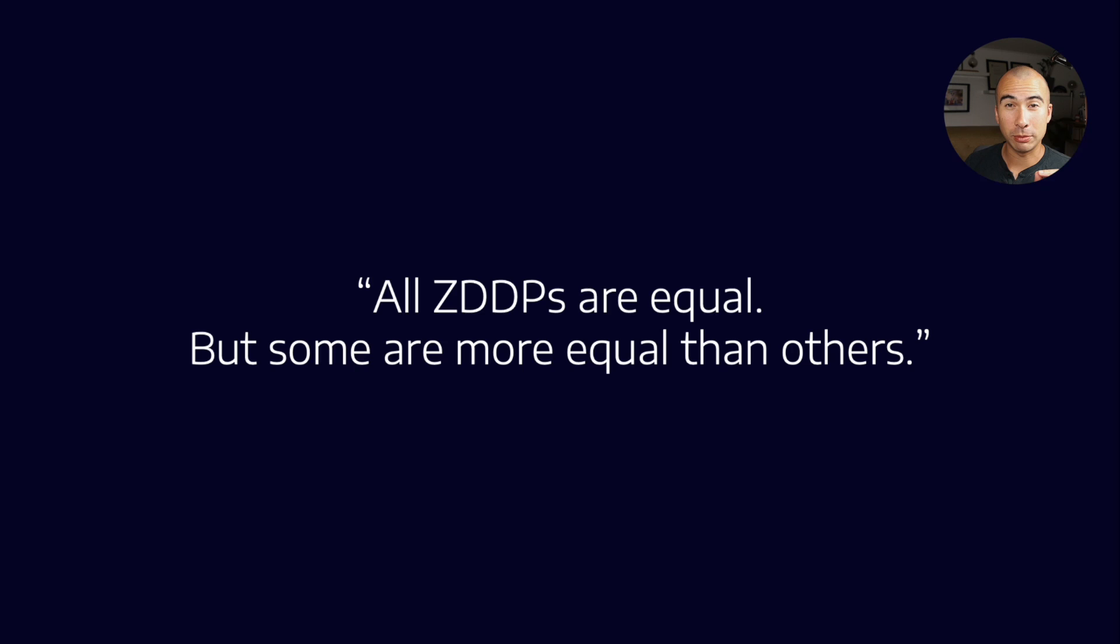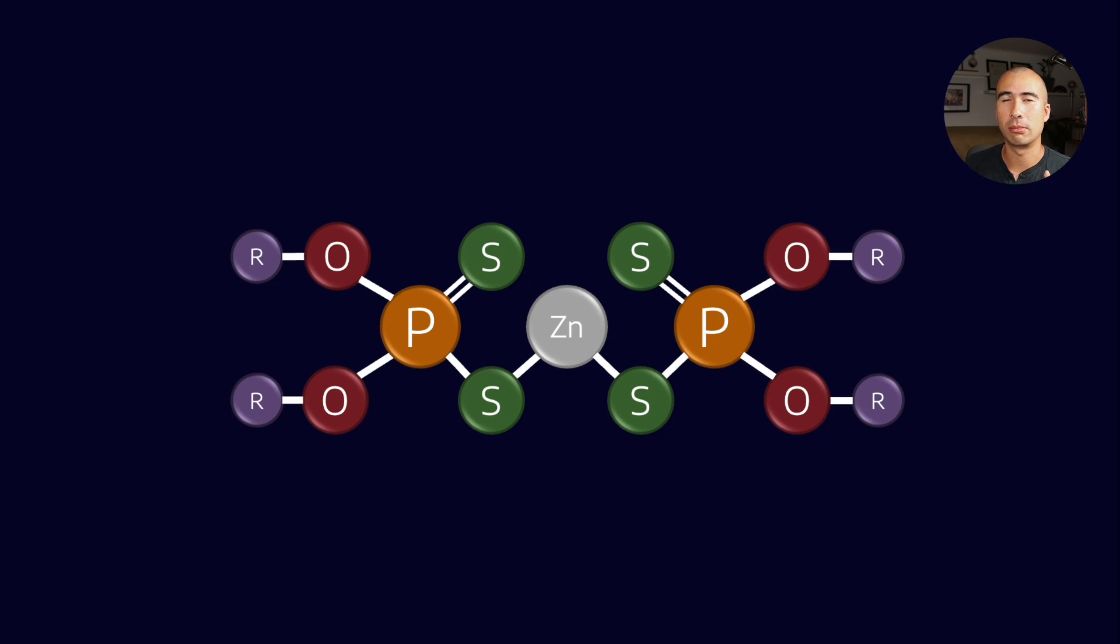Now the reason for this is because there are many different types of ZDDP. Now why should this be of interest to us? Well, ZDDP is a really important molecule in the lubricants world, mainly because it's a multifunctional additive that provides anti-wear protection as well as antioxidant properties.